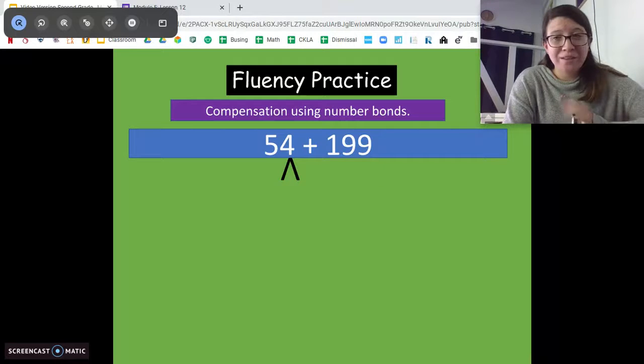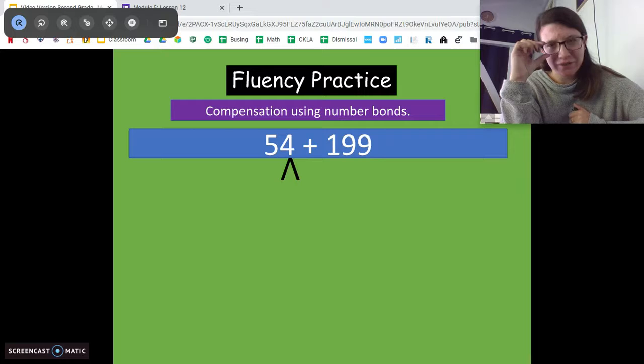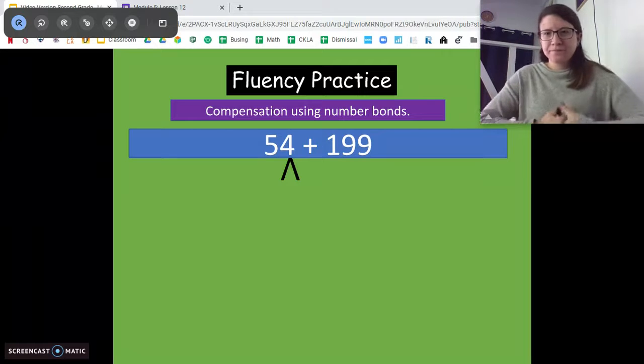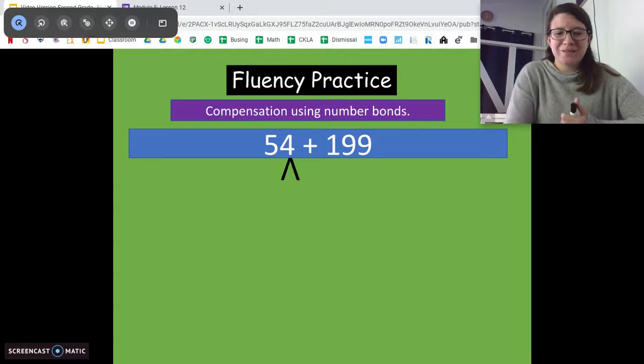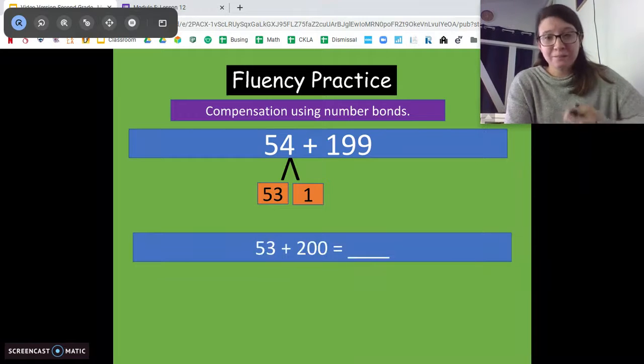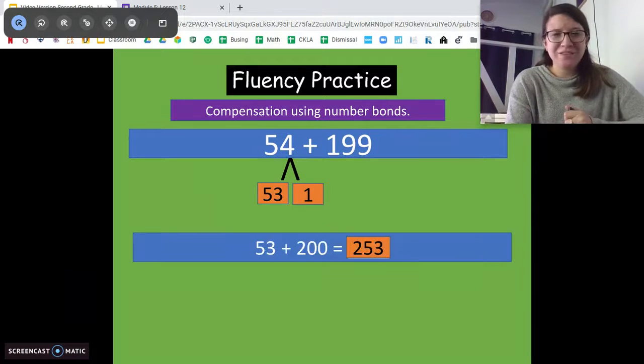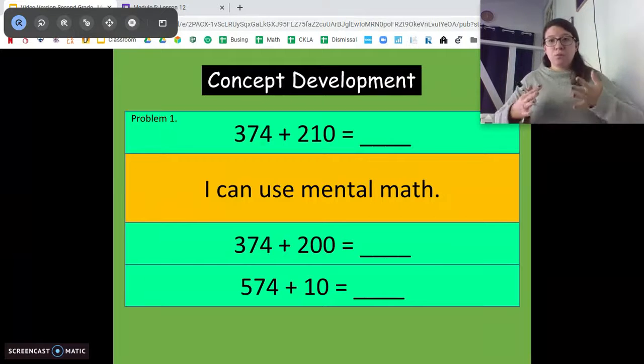A little bit trickier with this one. Same idea. Get 199 to its next 100. Pause and solve. Good. We're still taking one out. Still taking one out. That's fine. But instead of 100, we're at 200 plus 53. 253. Good. Alright. I'm gonna skip this because I want to get to our work for today.